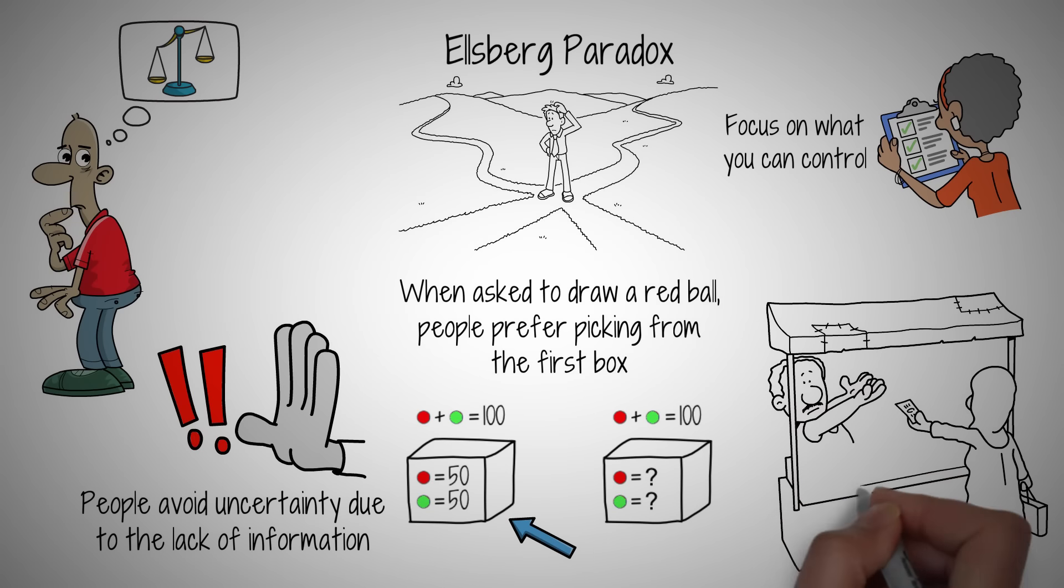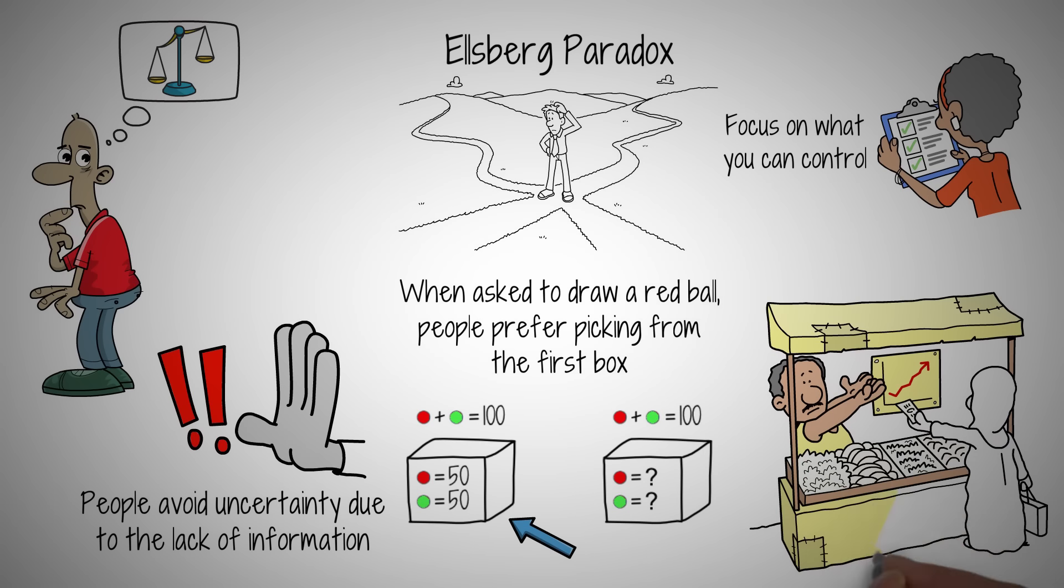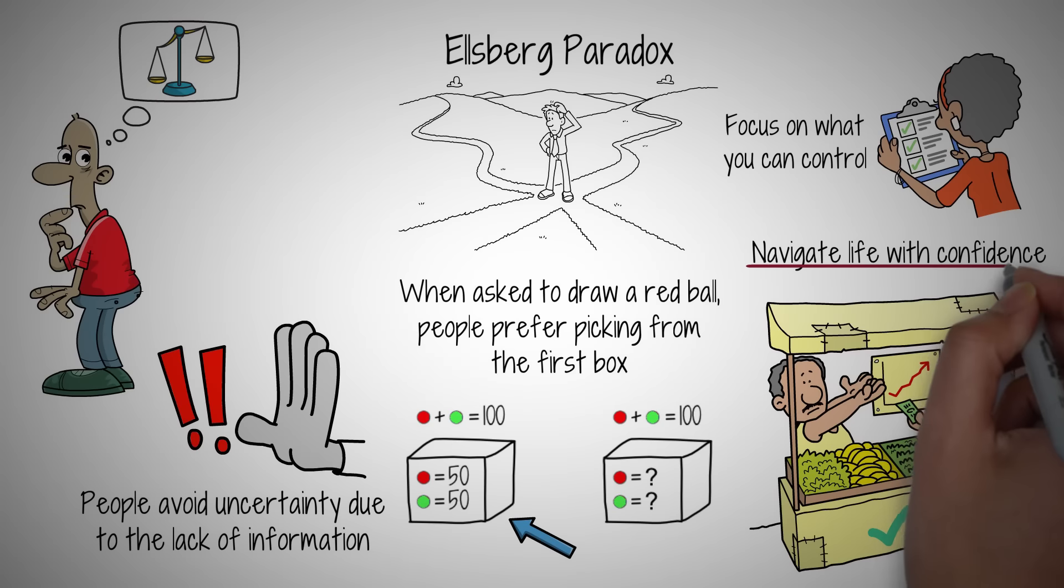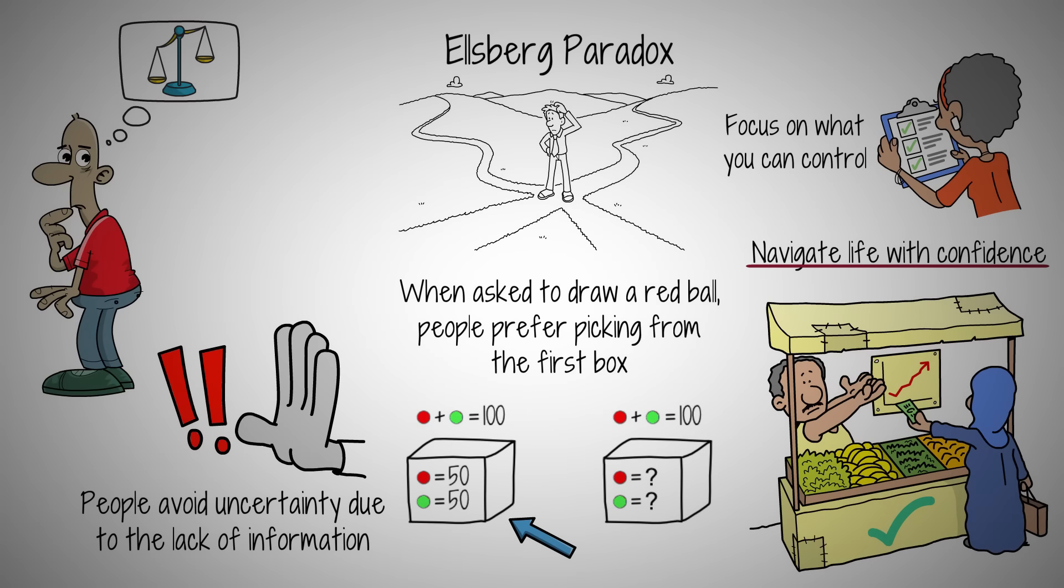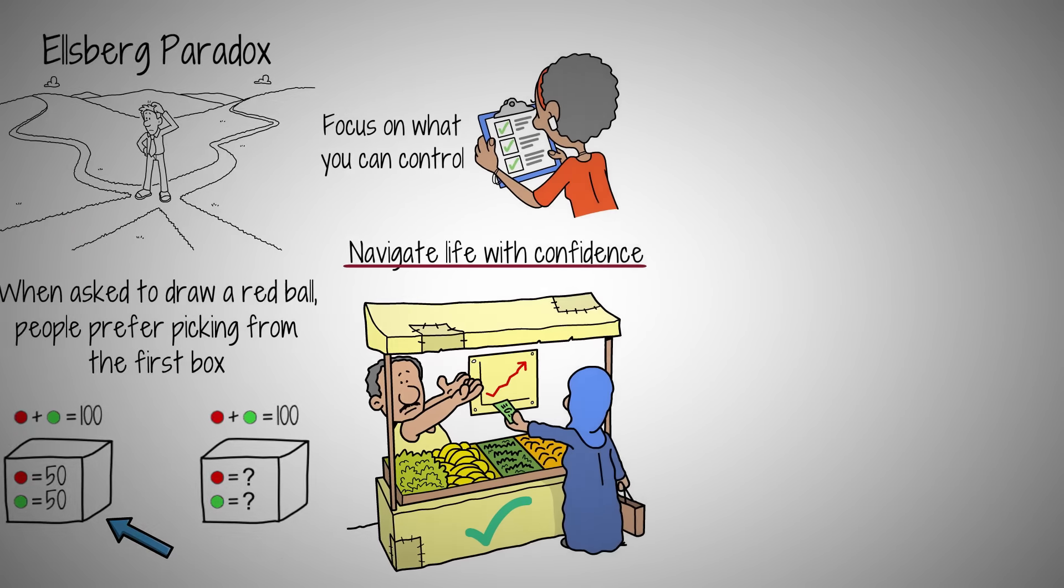For instance, an entrepreneur might face uncertain market conditions but can still succeed by focusing on product quality and customer service, leveraging the Ellsberg paradox to their advantage. Understanding the Ellsberg paradox teaches us to navigate life's uncertainties with confidence, making smarter, strategic choices. Let it inspire you to face the unknown, turning fear into your strongest decision-making tool.